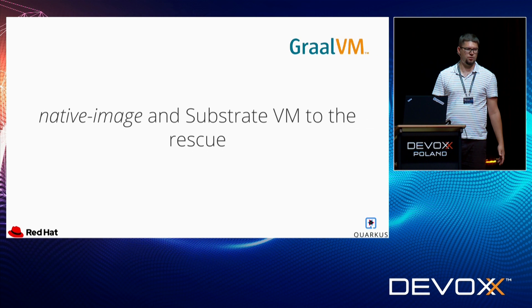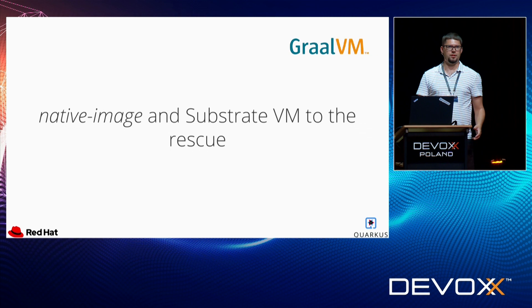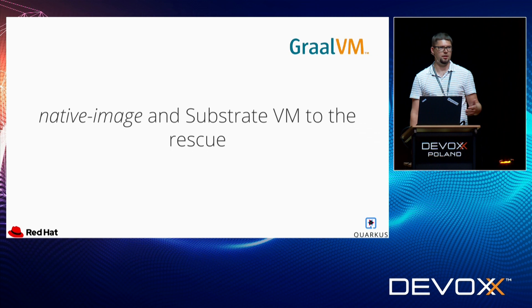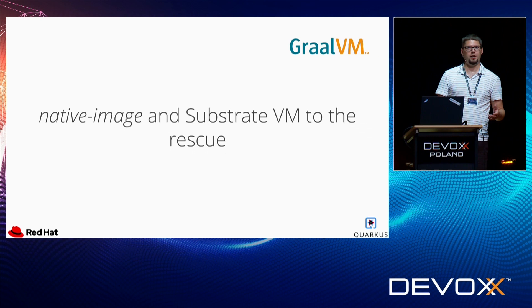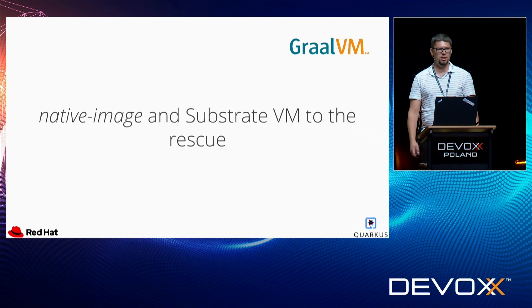GraalVM is a new Java VM from Oracle and has lots of interesting features, but the ones that are interesting from the Quarkus perspective are SubstrateVM and native image. They allow for efficient ahead-of-time compilation of Java applications to native binaries. So how much can we gain with that?